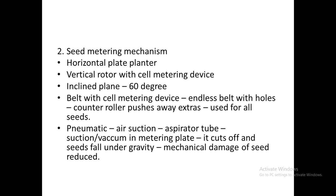The second component of the planter is the seed metering mechanism, which is similar to that of a seed drill. We have the horizontal plate planter, the vertical plate planter, the inclined plate planter, the belt with cell metering device, and the pneumatic seed metering mechanism. The horizontal and vertical plate types have been described previously for the seed drill. The inclined plate type is similar, with the plate at an inclination of 60 degrees with the vertical.